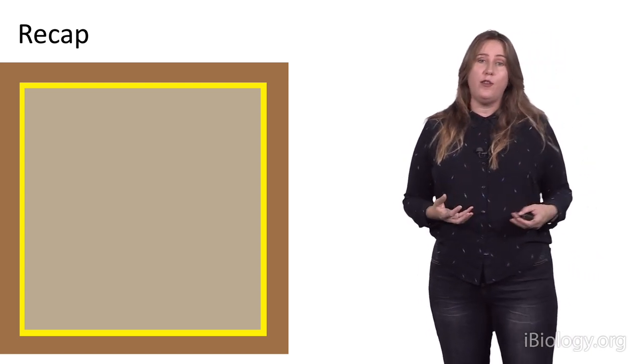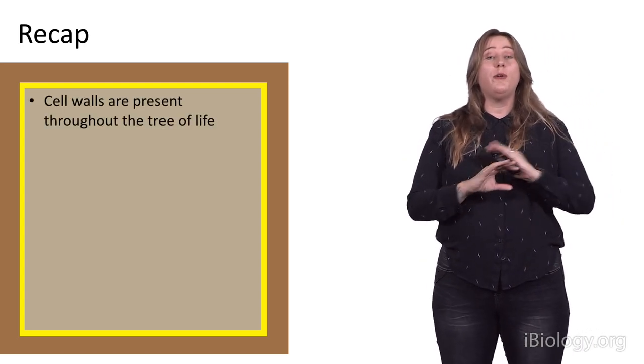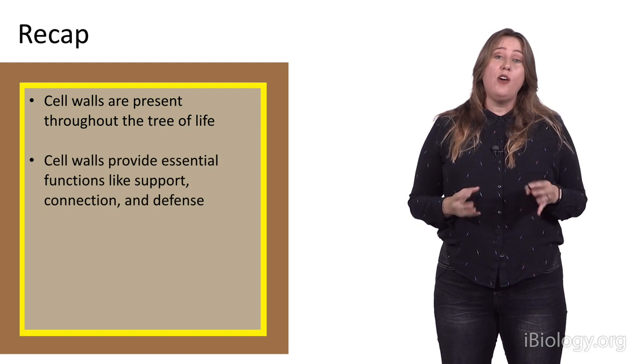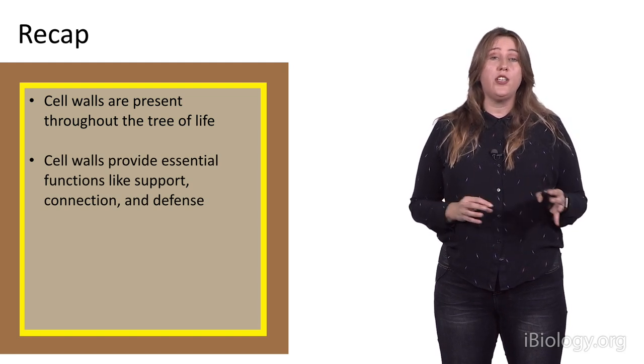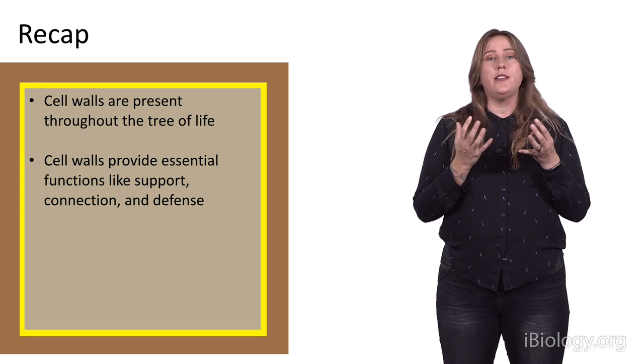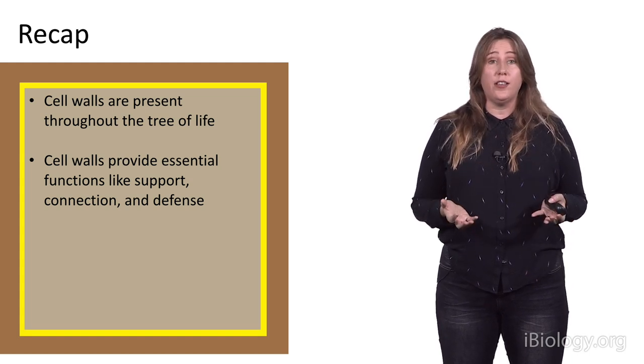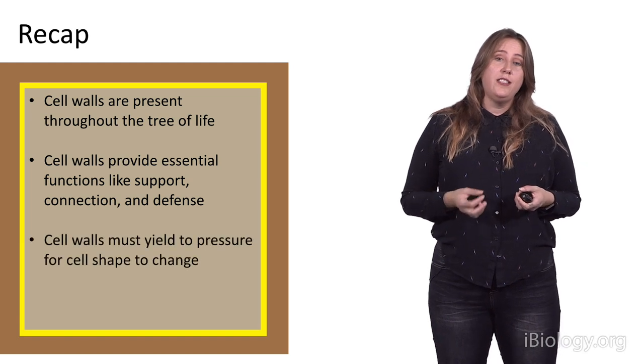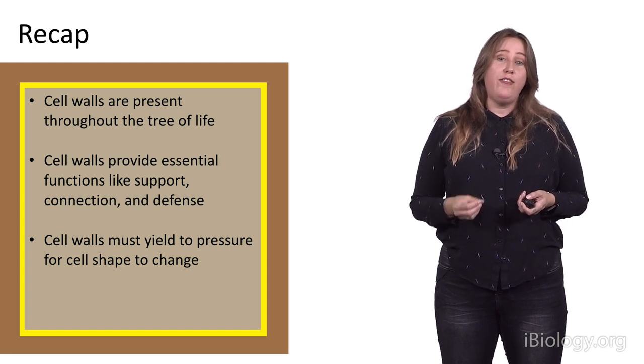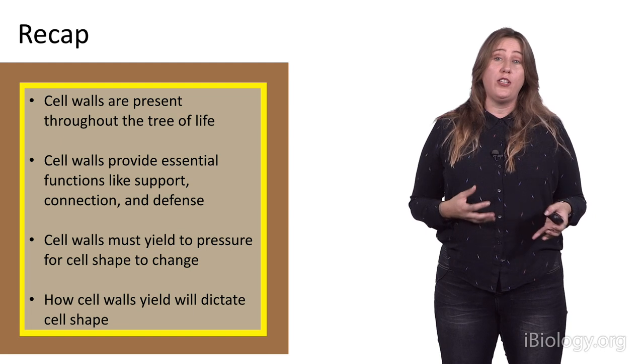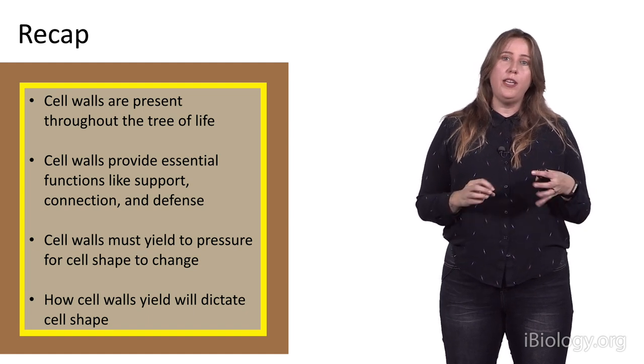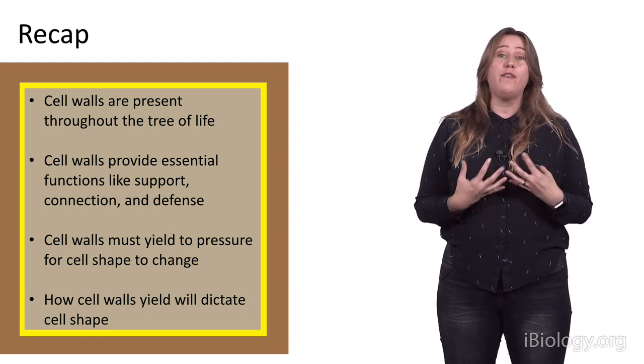So, let's recap for a moment what we've discussed so far. First of all, cell walls are present throughout the tree of life. They are not exclusively the domain of bacteria nor plants. Second, cell walls provide essential functions like support, connection, and defense. And in fact, all of these things would have been traits that evolved with these walled organisms as they first developed into multicellular creatures that we see today. Cell walls have to yield to pressure in order for a cell shape to change. This is a physical reality. And in fact, the way that the cell wall yields will dictate the eventual cell shape. And as we've just seen in some of our real-life plant examples, the way that that's coordinated across a tissue will end up giving you an incredibly beautiful patterned and functioning organism.